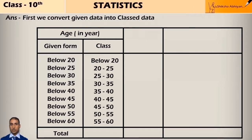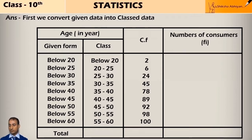The cumulative frequencies here are 2, 6, 24, 45. Now we need to find the frequencies. To find frequencies, we subtract the previous frequency from the next cumulative frequency. First class frequency is 2. Second class frequency is 6 minus 2 equals 4. Next is 18, 21, 33, 11, 3, 4, 6, 2.